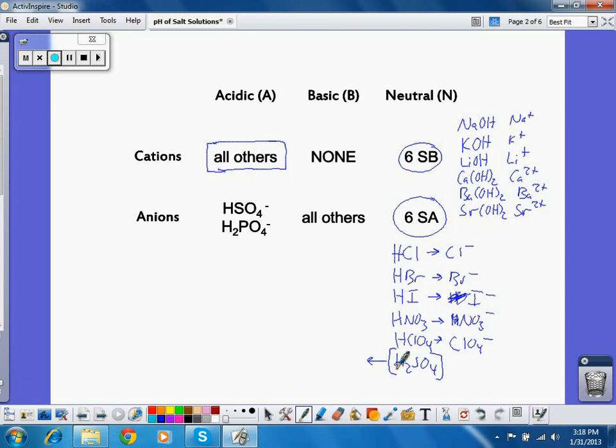So H2SO4, strong acid, its conjugate base is HSO4 minus, but that is also acidic. Likewise, the conjugate base of phosphoric acid is H2PO4 minus, but that in turn is also acidic.